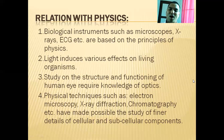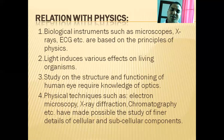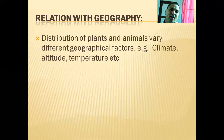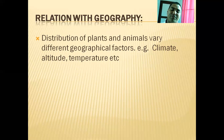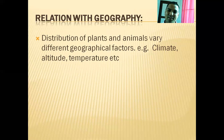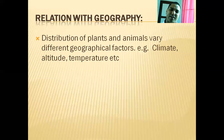In physics, if these types of devices and instruments had not been invented, we would be unable to know about the cells. In relation to geography, the distribution of plants and animals varies with different geographical factors. Dear students, Nepal is also divided into three geographical regions: Himal, Pahad, and Tarai. In different regions, we can see different types of plants and animals.